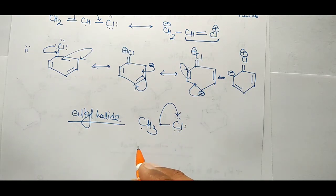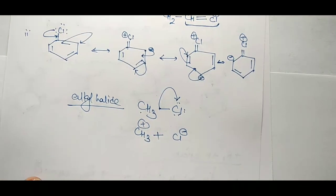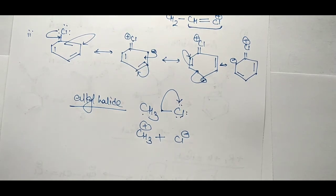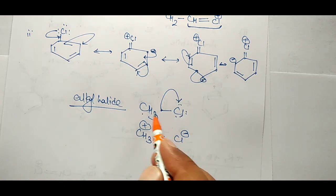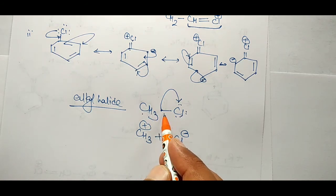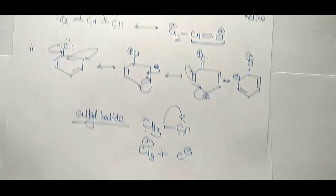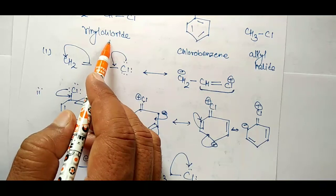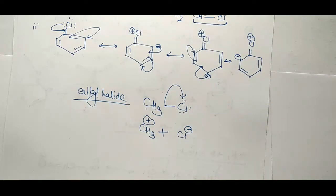So chlorine withdraws electron density toward itself, causing the C-Cl bond to break and the carbon to carry a positive charge. It is concluded that in the case of alkyl halide, the carbon-chlorine single bond ionizes very easily because no resonance is feasible. But in the case of vinyl chloride and aryl halide, the carbon-chlorine has double bond character.